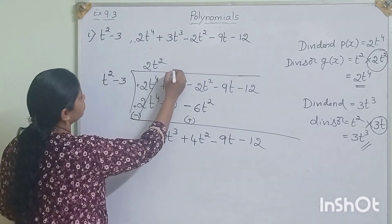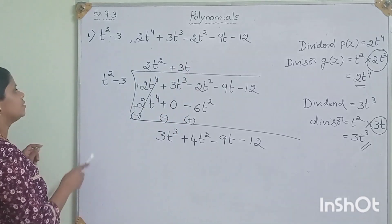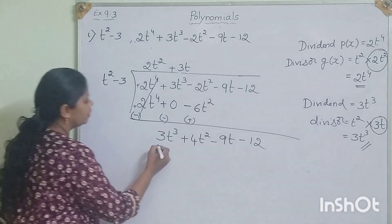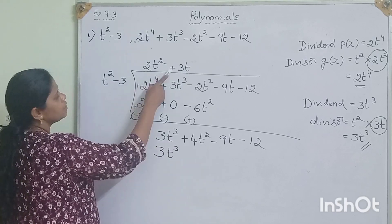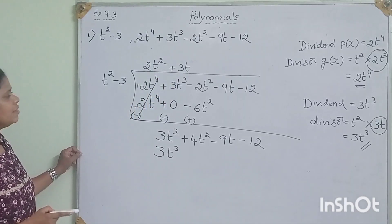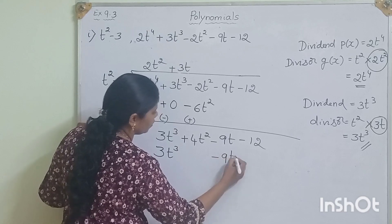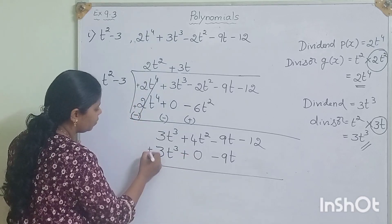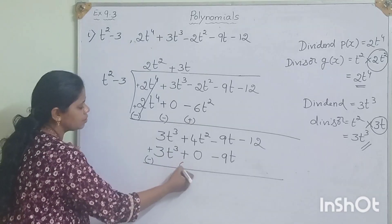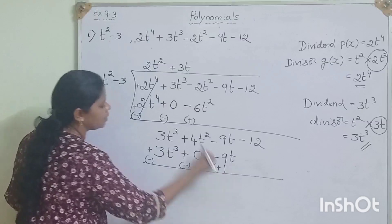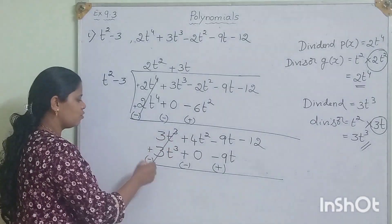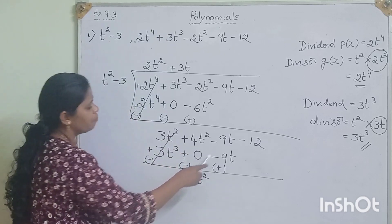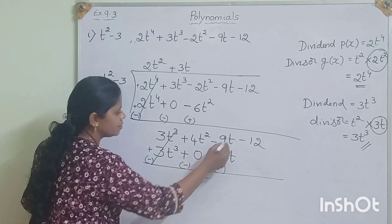Multiplying: plus into plus is plus — t² × 3t = 3t cubed. Minus into plus is minus — 3 × 3t = 9t, so minus 9t. t squared term is missing so we put 0. We change the signs for subtraction: 3t cubed minus 3t cubed cancels. 4t squared minus 0 is 4t squared. Minus 9t plus 9t cancels to zero.